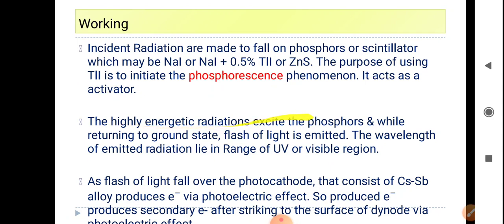The highly energetic radiations excite the phosphor, and while returning to ground state, a flash of light is emitted. The wavelength of emitted light radiation lies in the range of UV and visible region.